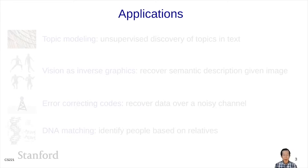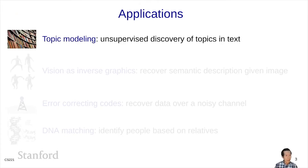There are many applications of Bayesian networks, and more generally generative models. The first is topic modeling, where the goal is to discover hidden structure in a large collection of documents. An example is Latent Dirichlet Allocation, or LDA, which posits that each document is generated by drawing a mixture of topics and then generating the words given those topics.